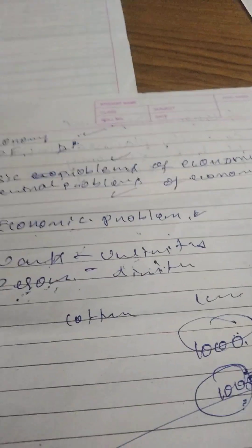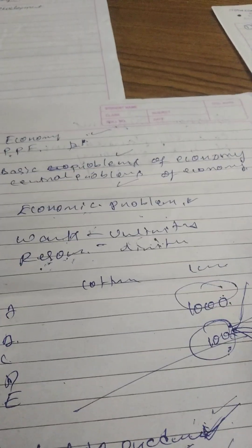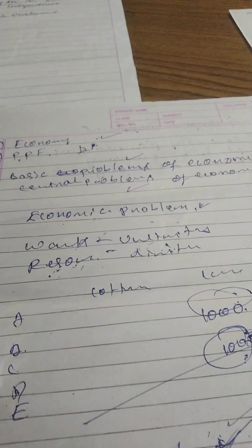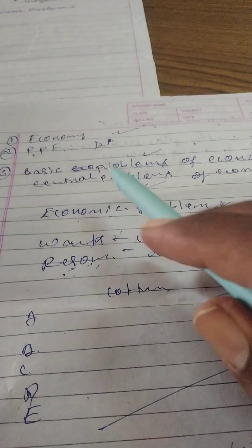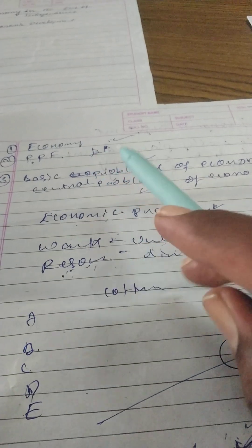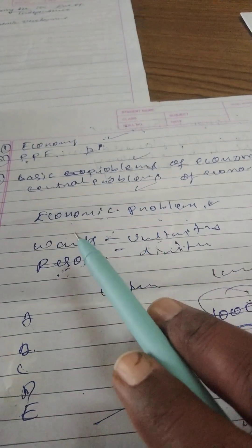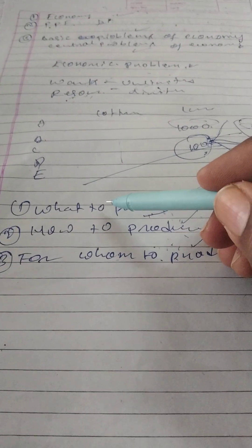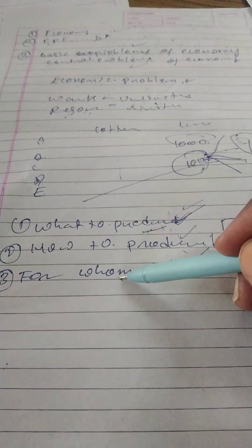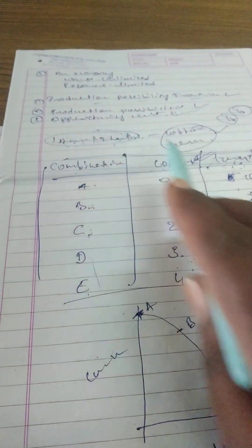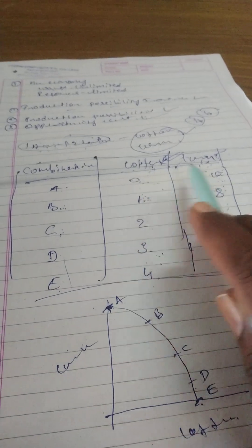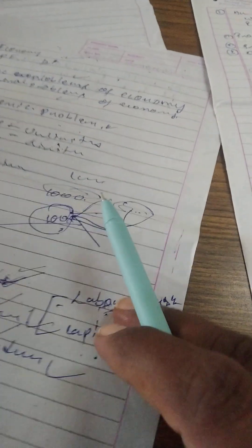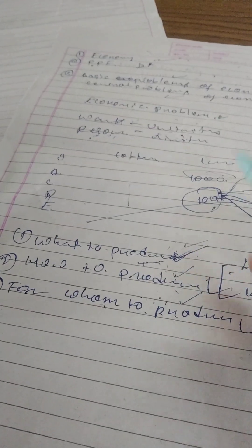Welcome back to my channel. In the previous lesson, we discussed the basic economic problems, also called central problems of an economy. There are three central problems: what to produce, how to produce, and for whom to produce. These problems arise when using limited resources to decide what goods should be produced and how.